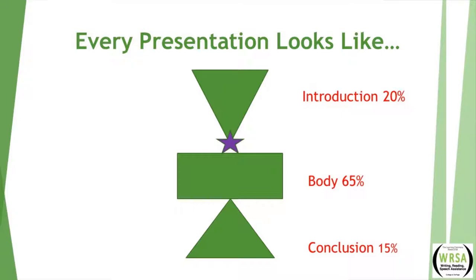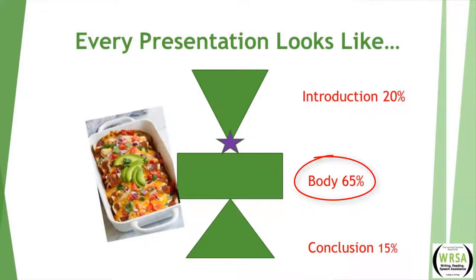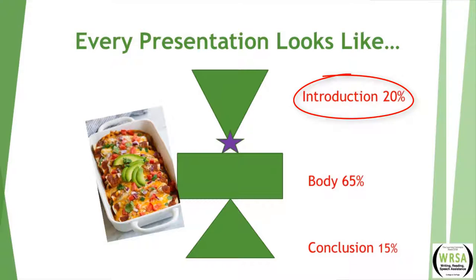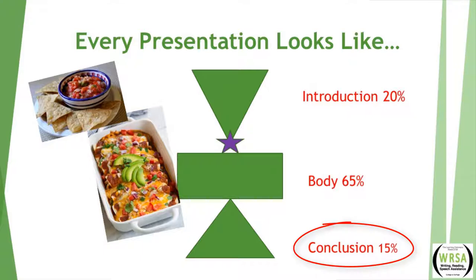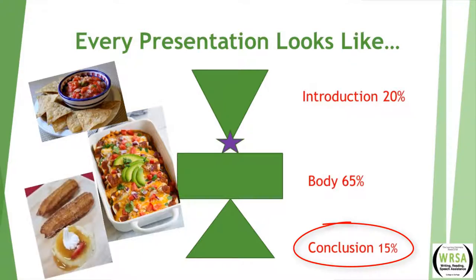We like to liken this pattern to planning a meal. We recommend that you start with the body, or what your main dish is going to be — perhaps enchiladas. Once you decide your main dish or your body, it becomes easier to go back and do your introduction, or think about what your appetizer might be, say chips and salsa. And then finally think of ways to conclude or offer a dessert, maybe churros or flan.